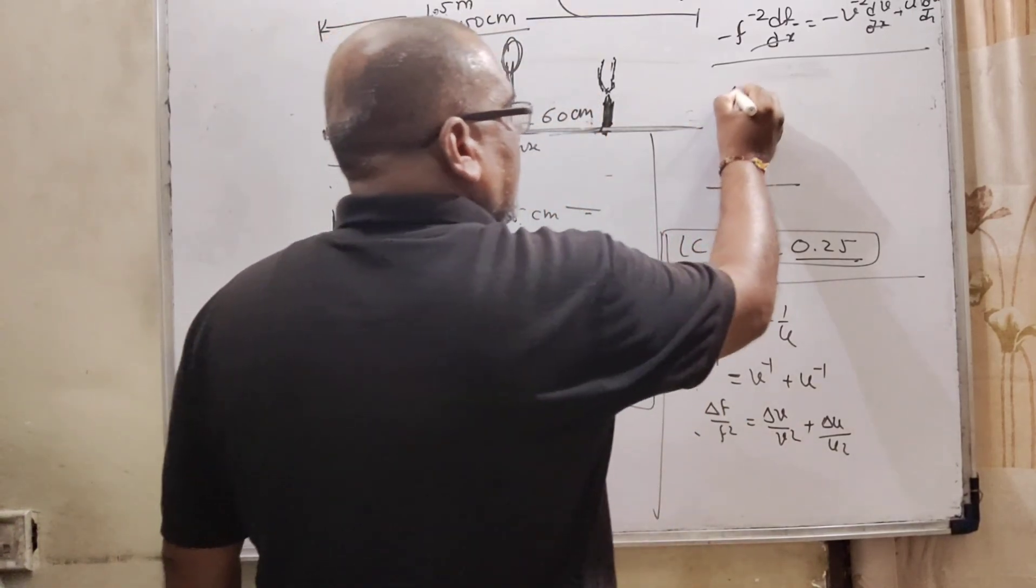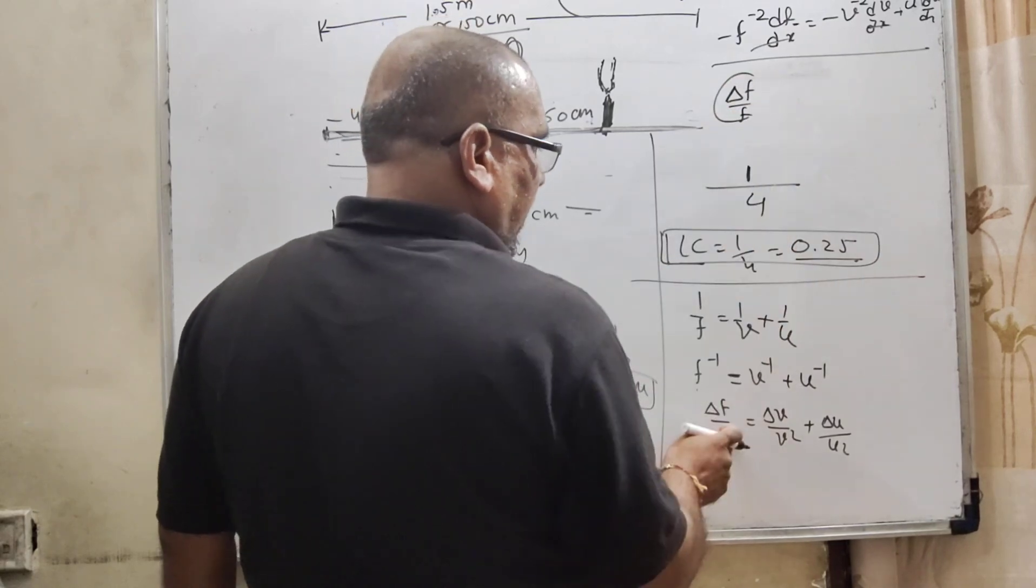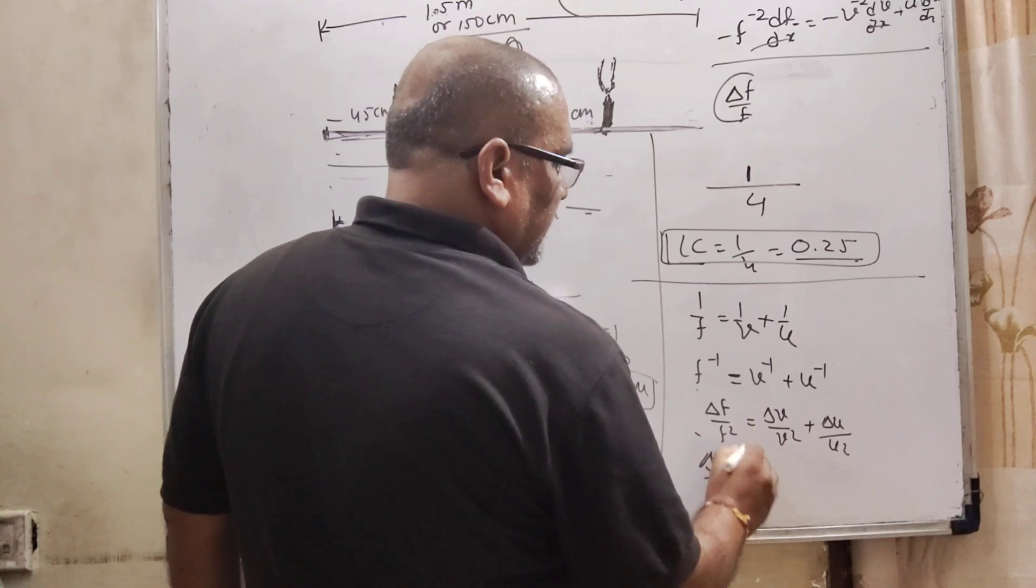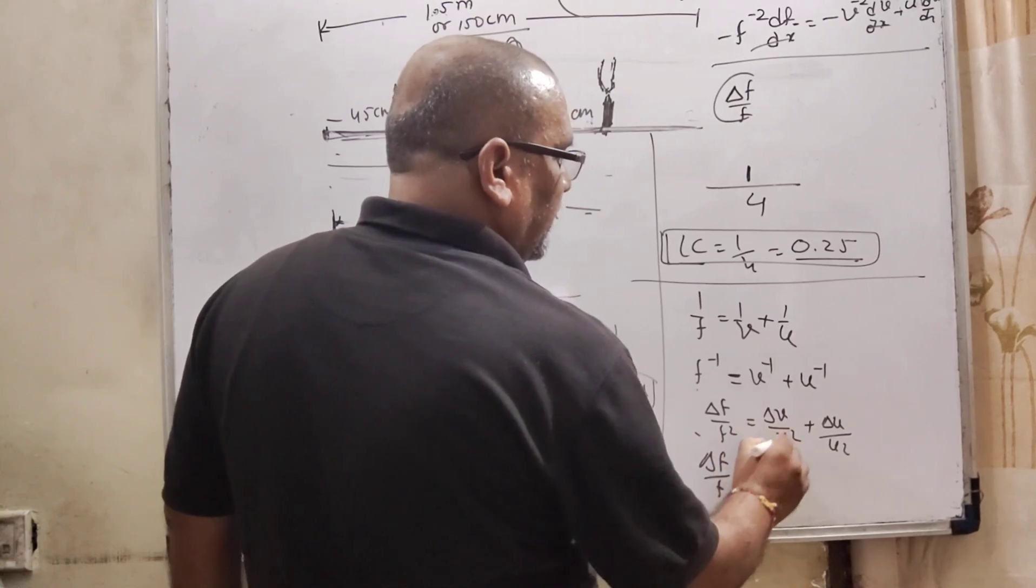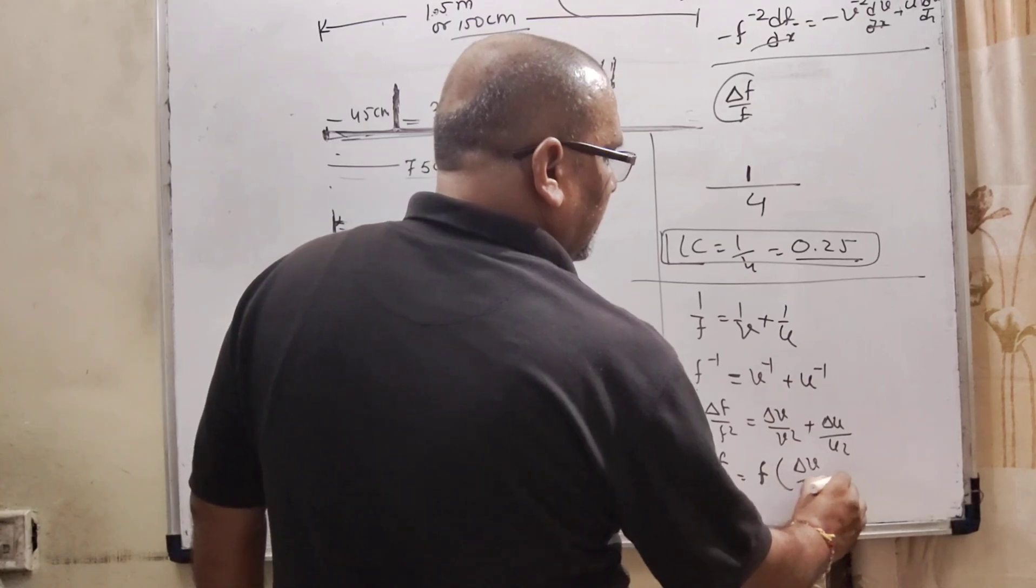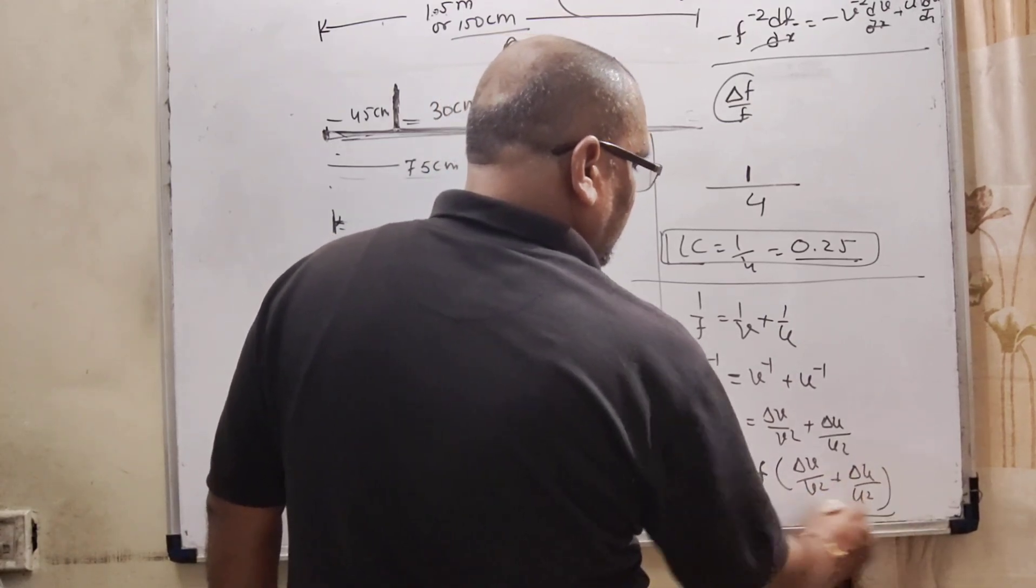But here, percentage error of the focal length that is delta f upon f. So here, one f is extra. So here, delta f upon f. This f is, one f is shifted towards to the right side. Delta v upon v square plus delta u upon u square.